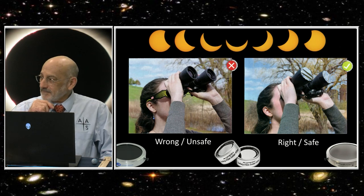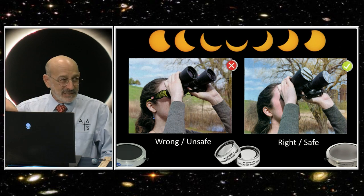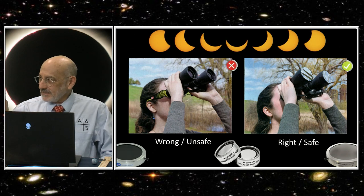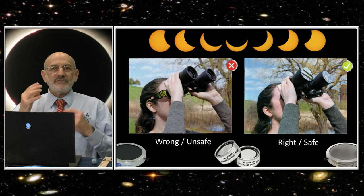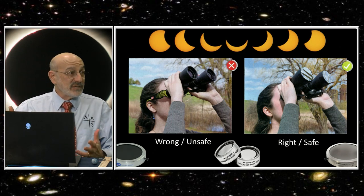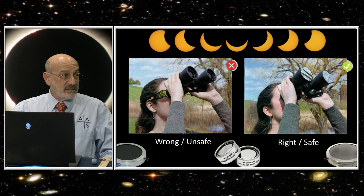That image shows wrong, unsafe on the left. She's got her solar eclipse glasses on, but they're at the back end, the wrong end. Not a good idea. On the right side, no solar eclipse glasses—solar filters over the front. Very important.